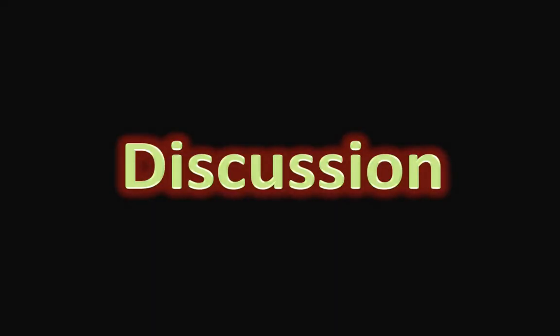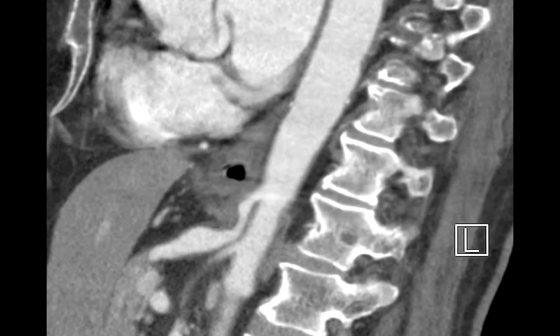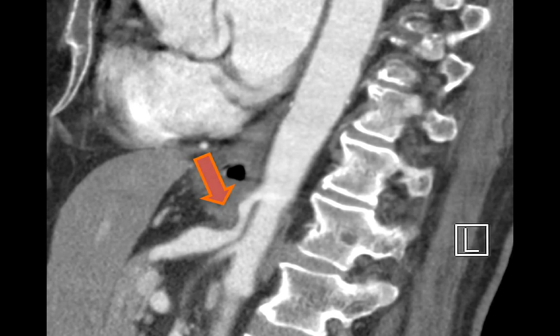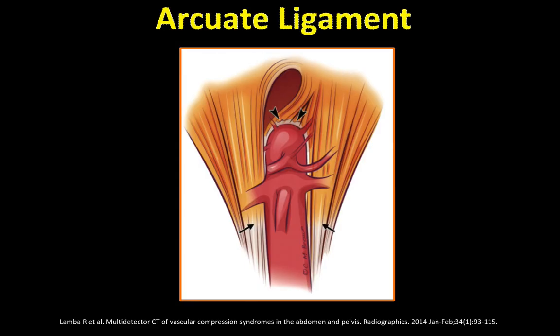Now let's discuss this finding. What is it that has soft tissue density and crosses on top of the proximal portion of the celiac artery from one side to the other? This actually represents what is called the median arcuate ligament, which is a ligament that connects the right and left diaphragmatic crura, and usually connects the crura at a higher level than the origin of the celiac artery.